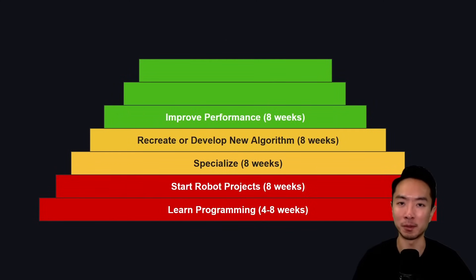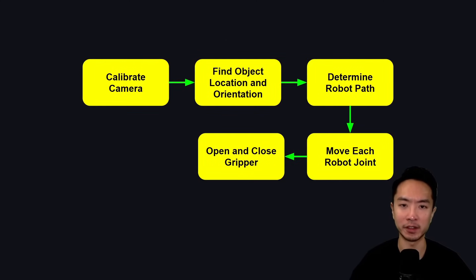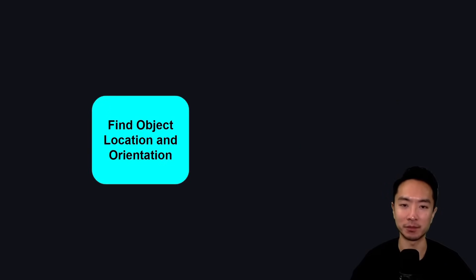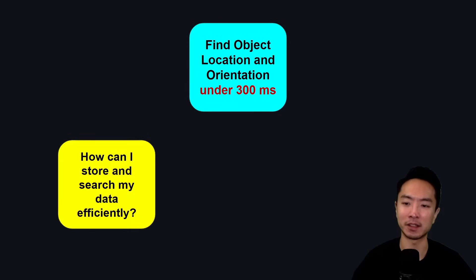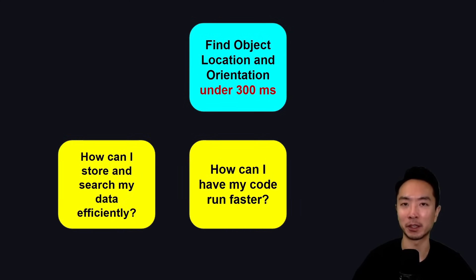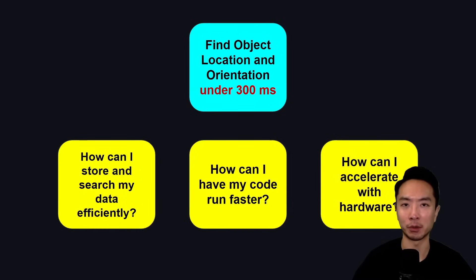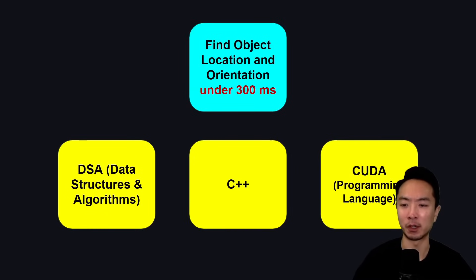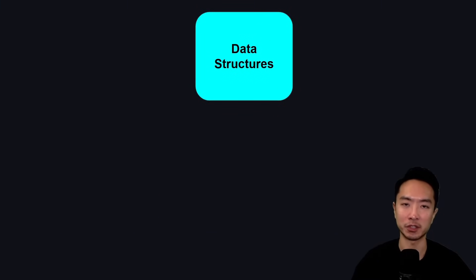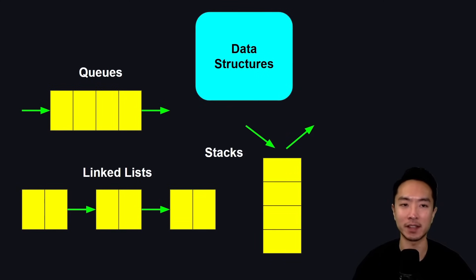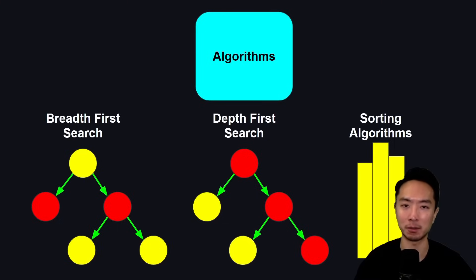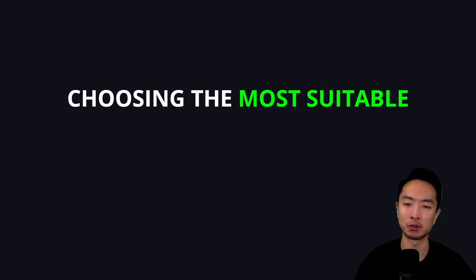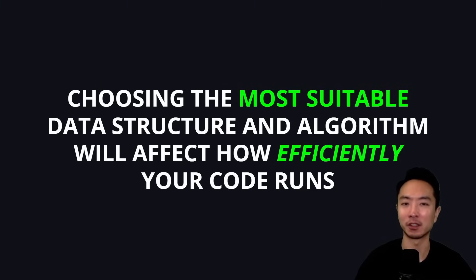Step five is improve performance. Spend about eight weeks here. Let's say we want to find the object location and orientation in under 300 milliseconds. Questions you start asking include: how can I store and search data efficiently? How can I have my code run faster? How can I accelerate with hardware? These can be answered with data structures and algorithms, C++, and CUDA. Data structures include queues, linked lists, stacks, and trees. Algorithms include breadth-first search, depth-first search, and various sorting algorithms. Choosing the most suitable data structure and algorithm will directly affect how efficiently your code runs.